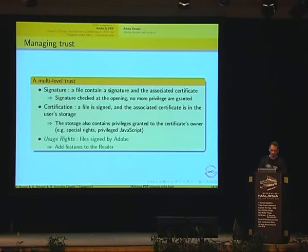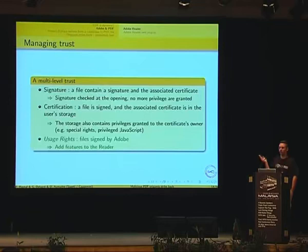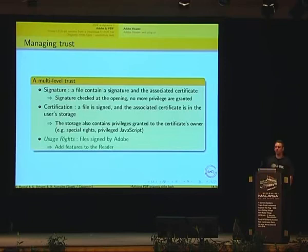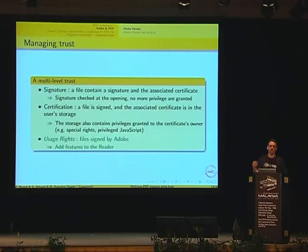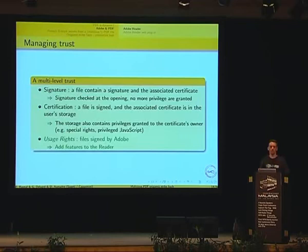Another interesting part of Adobe's security model is trust. By default, a PDF is just a PDF — not supposed to do anything. You can sign a PDF, but signing just says you created it and gives no additional privilege. So they added certification: if you have a certificate in your storage and the PDF is signed with it, you can associate properties with it — for instance, allowing that PDF to connect to a specific website. So if an attacker can modify user configuration, he could inject his own certificate with many privileges.